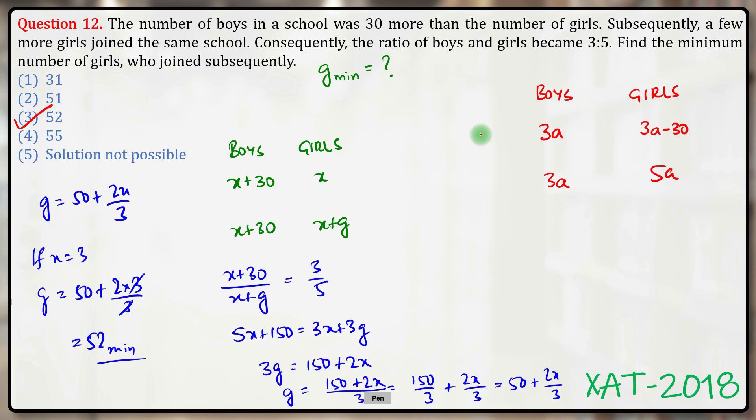Such that 3a minus 30 should be a positive integer. So putting that condition, I would get 3a minus 30 is greater than 0, or a is greater than 10.